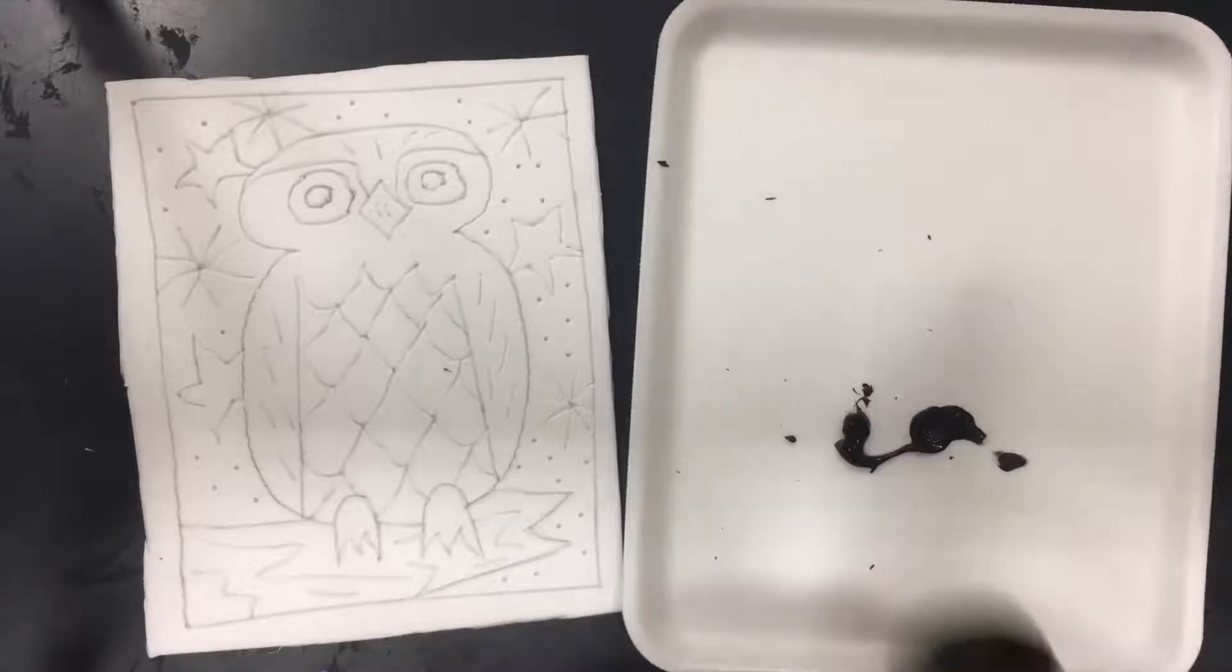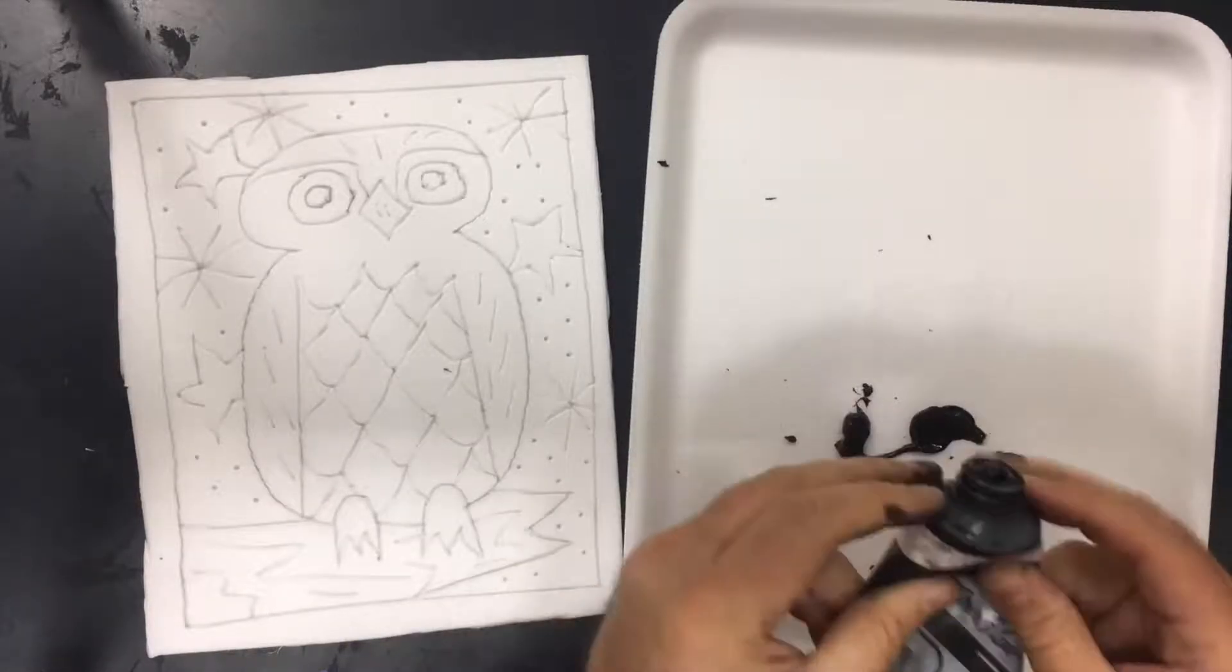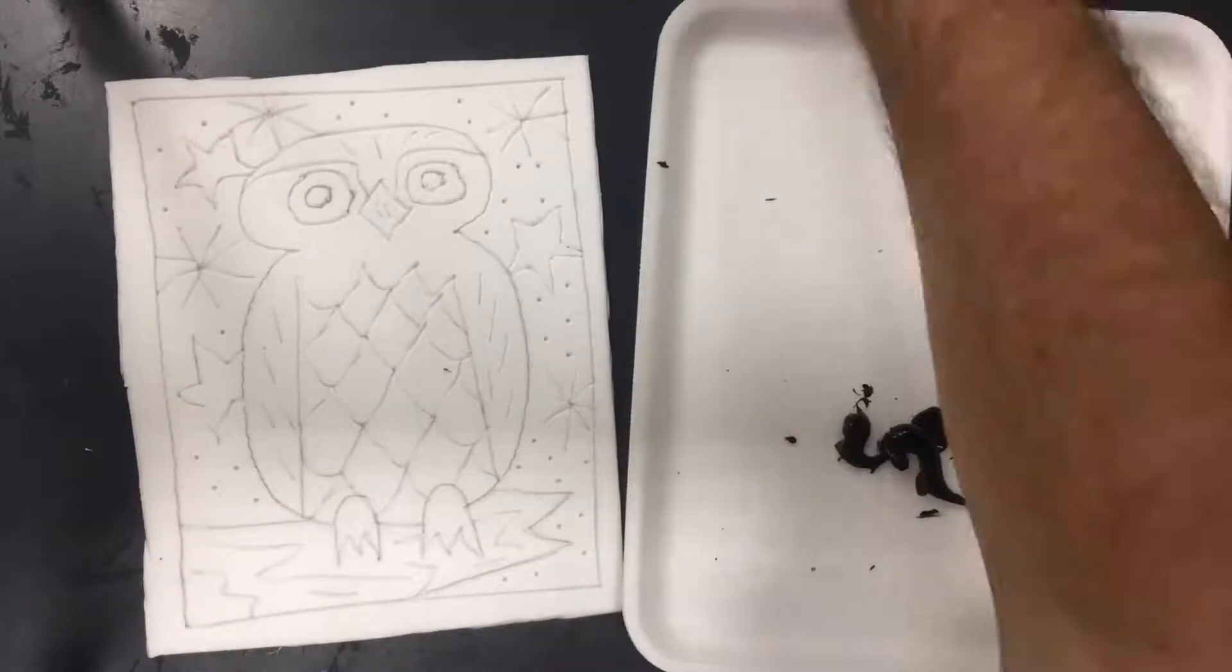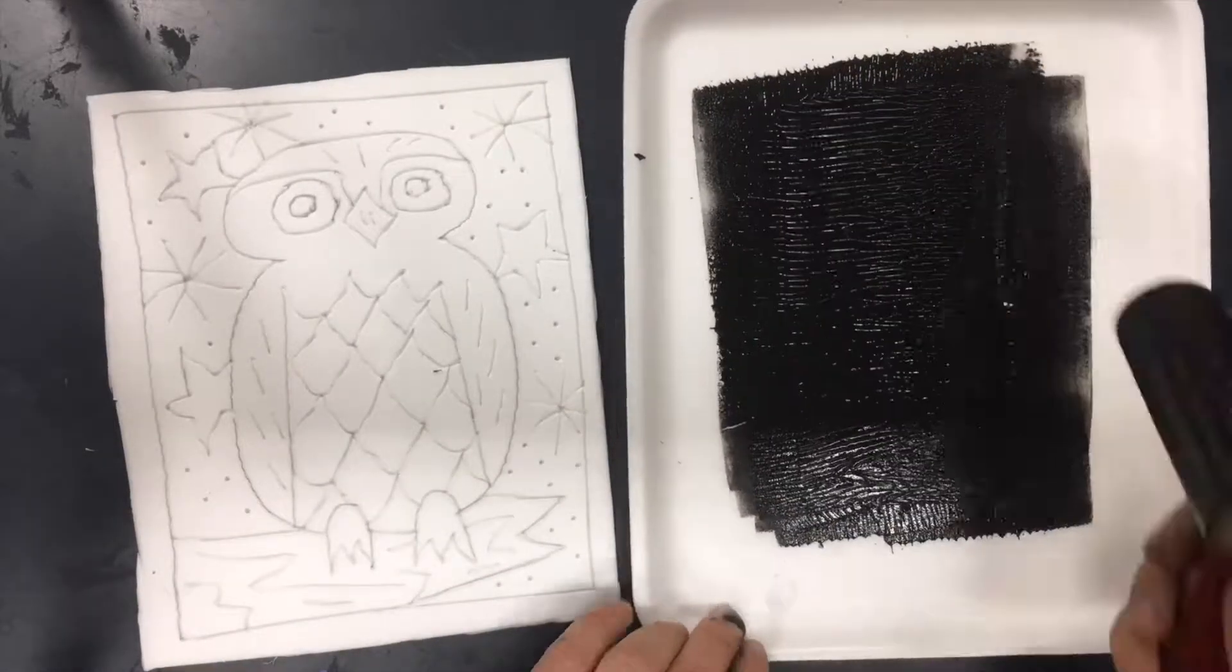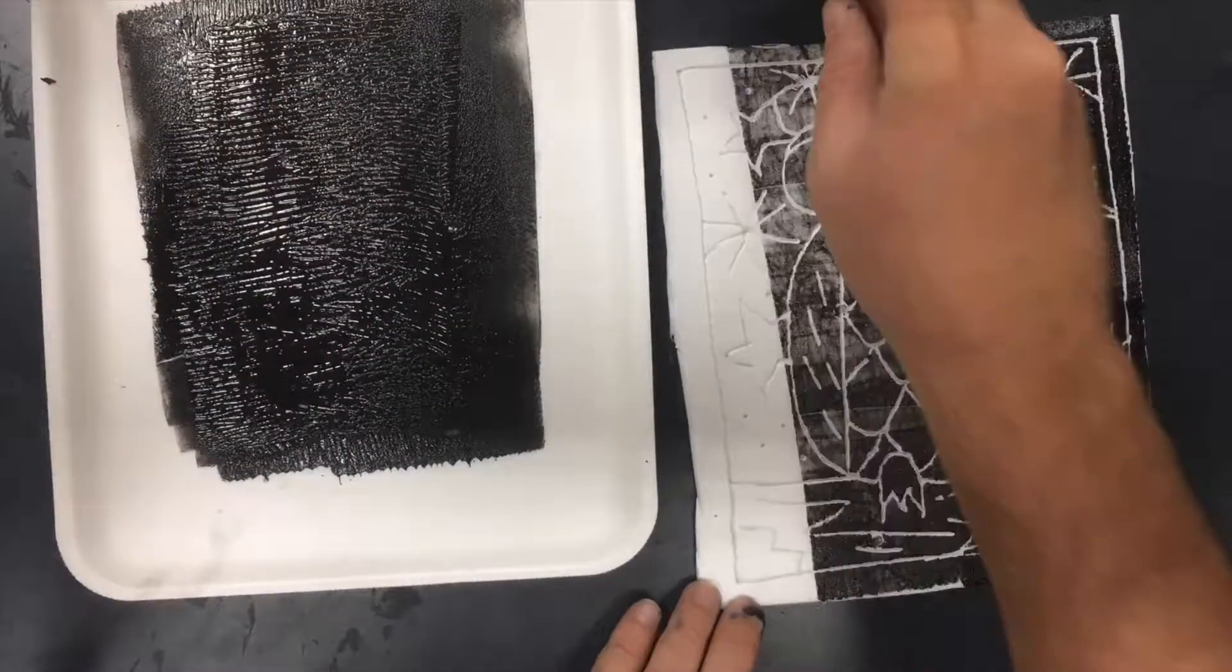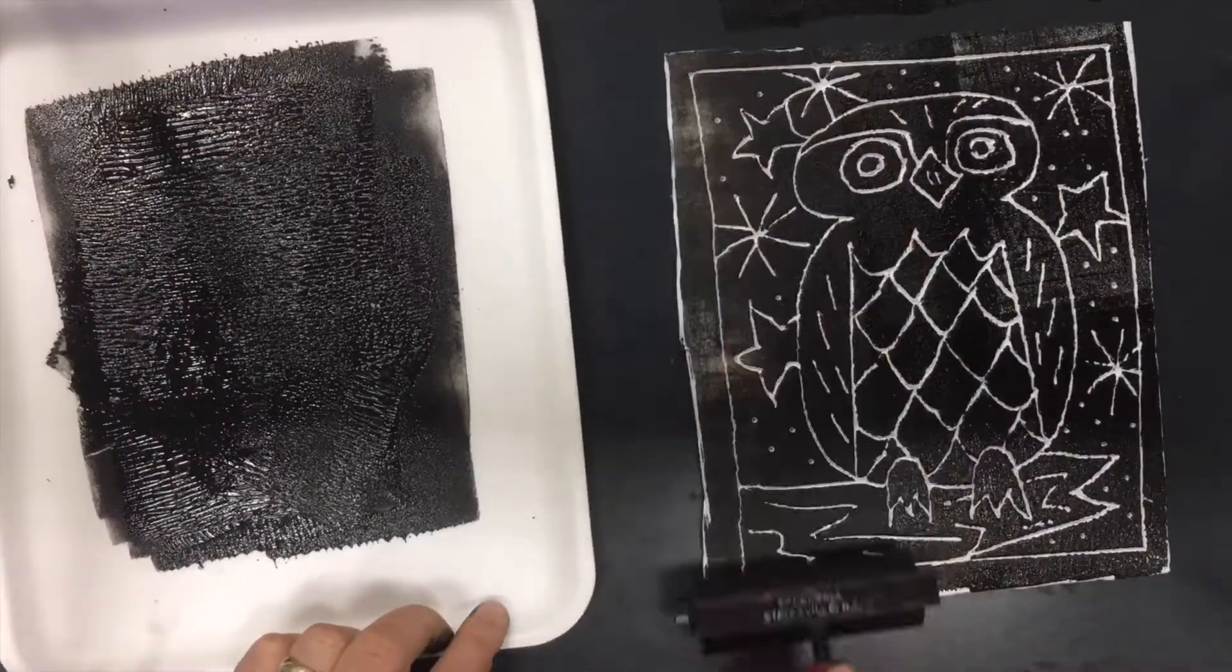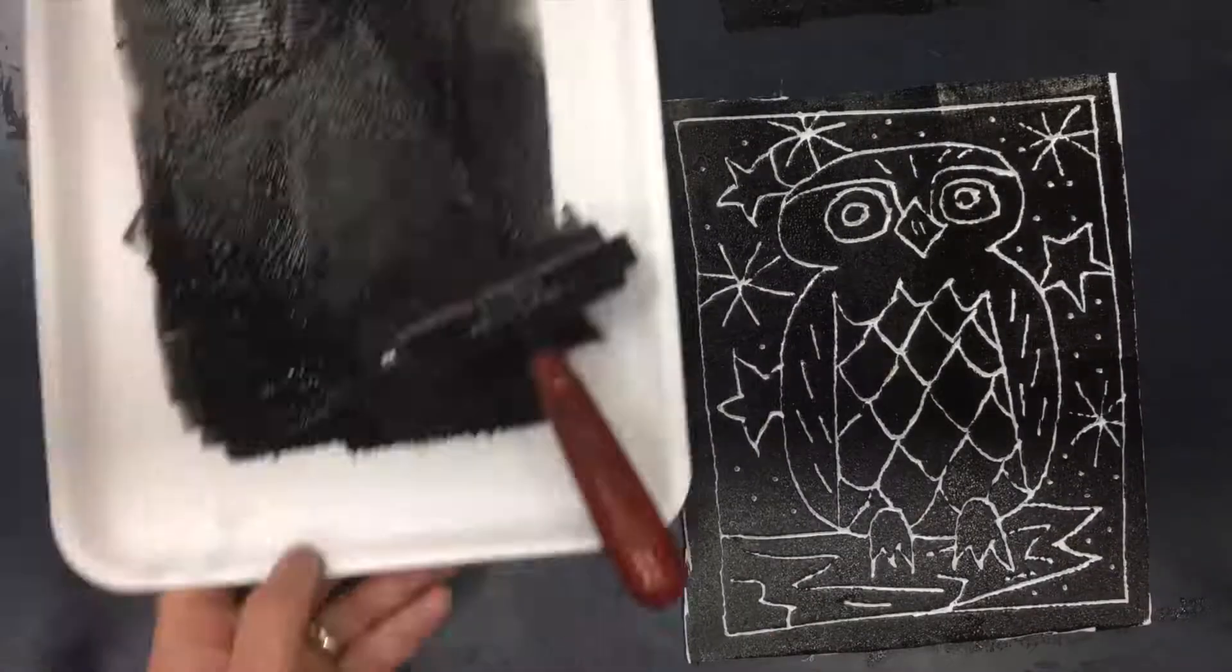Roll the ink out with a brayer. Then, when the ink is smooth, roll the brayer across your styrofoam plate. You'll see that the ink sticks to the styrofoam everywhere except in the grooves that you drew.